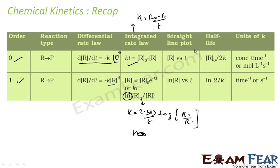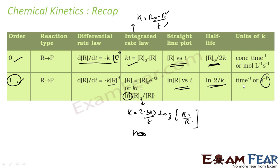For graphing: zero-order gives a straight line for R versus T; first-order gives a straight line for ln R versus T. Units differ: first-order K has units of per second (or per time), while zero-order K has units of moles per liter per second. This is the key difference between first-order and zero-order equations.